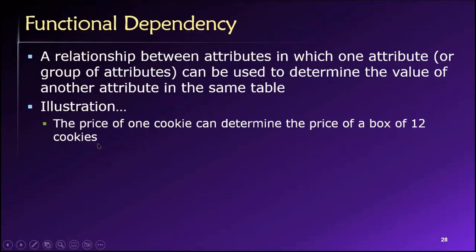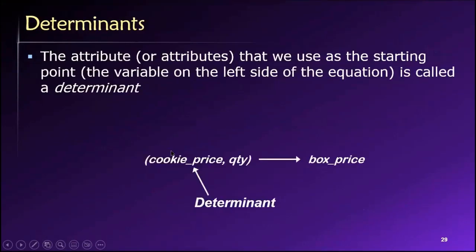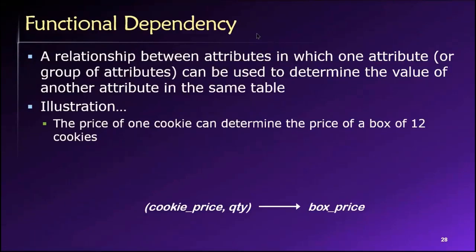So for example, this is a completely unrelated example. If we know the price of one cookie, we can use that to determine the price of a box of 12 cookies. So if one cookie costs 10 cents, we know that the box of 12 cookies should cost $1.20, assuming there aren't any advantages of bulk purchasing. So what we have here is this functional dependency. That is, the price of the box of cookies in this example depends on the price of an individual cookie and the number of cookies in the box.